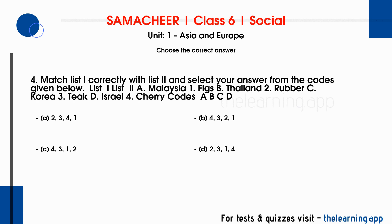Question 4: Match List I correctly with List 2 and select your answer from the codes given below. List I — List 2: A. Malaysia 1. Figs, B. Thailand 2. Rubber, C. 3. Teak, D. Israel 4. Cherry. Codes A, B, C, D. Options are: A. 2,3,4,1; B. 4,3,2,1; C. 4,3,1,2; D. 2,3,1,4. Correct answer is A: 2, 3, 4, 1.